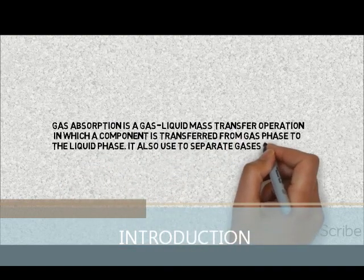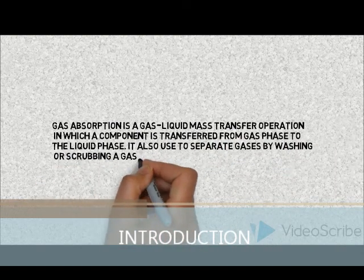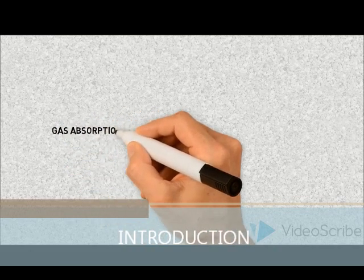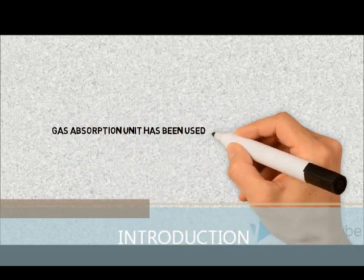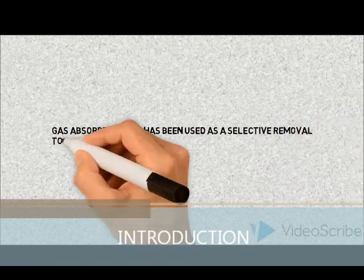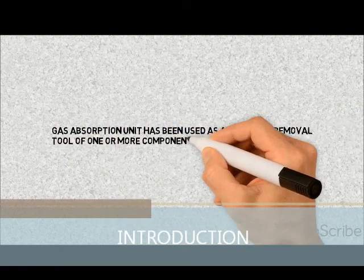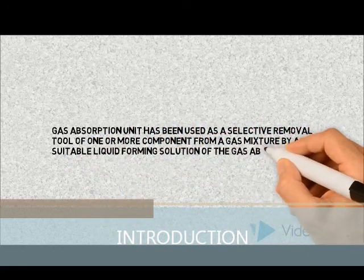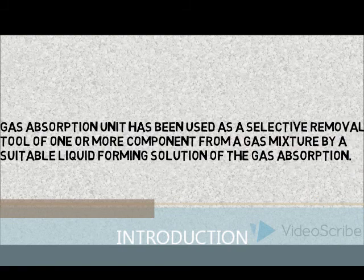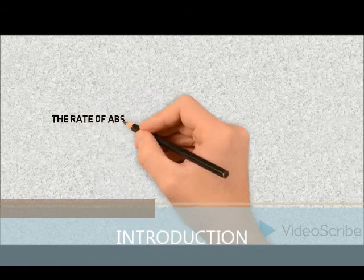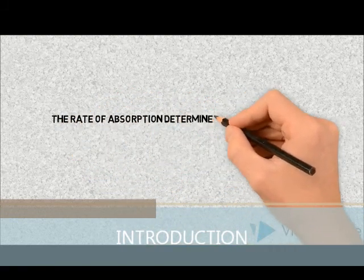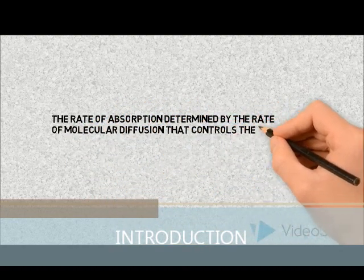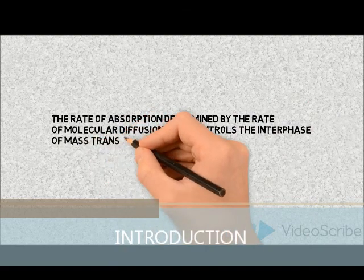Gas absorption is used to separate gases by washing or scrubbing a gas mixture. The gas absorption unit has been used as a selective removal tool of one or more components from a gas mixture by a suitable liquid, forming a solution of the gas absorption. The rate of absorption is determined by the rate of molecular diffusion that controls the interface of mass transfer.